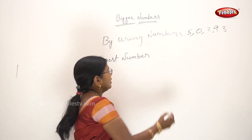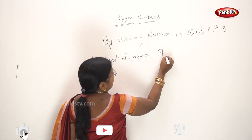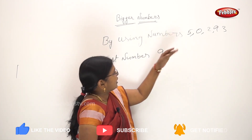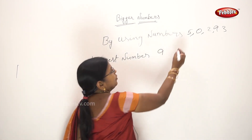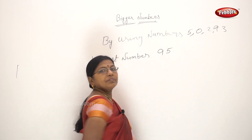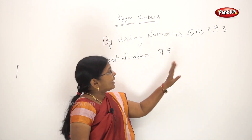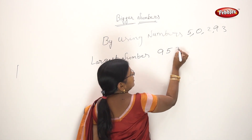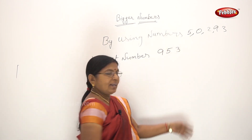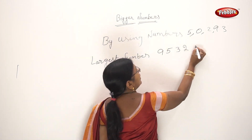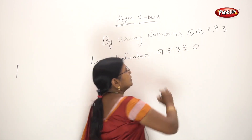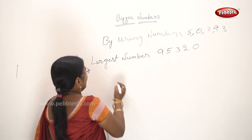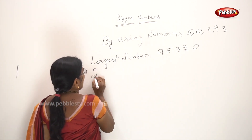The largest digit is 9. What is the next largest digit? 5. What is the next largest digit? 3. Next: 2, next: 0. In the same manner, we can also find the smallest number.